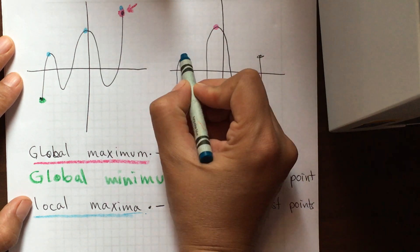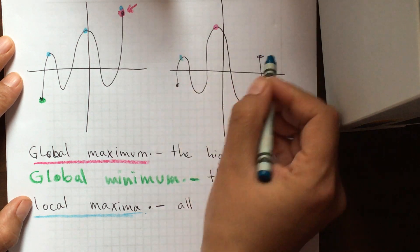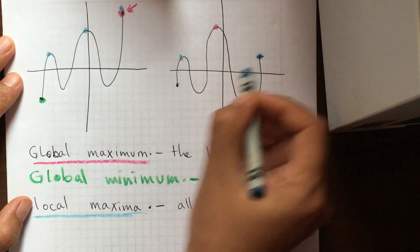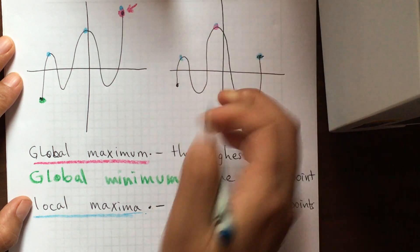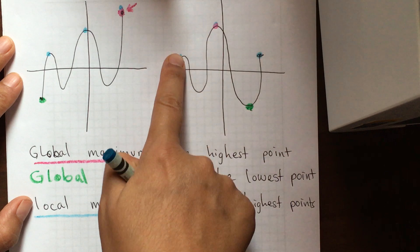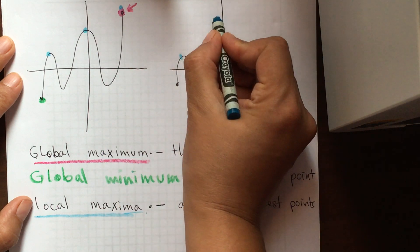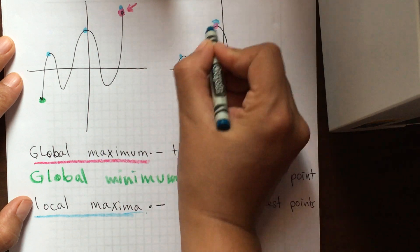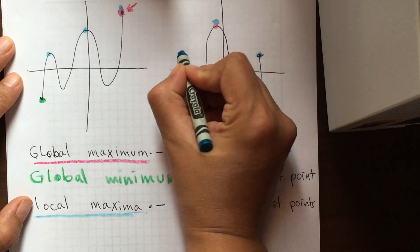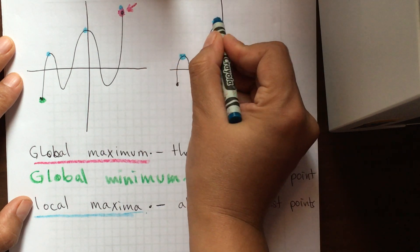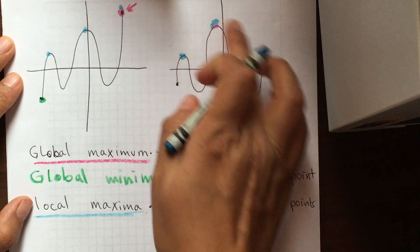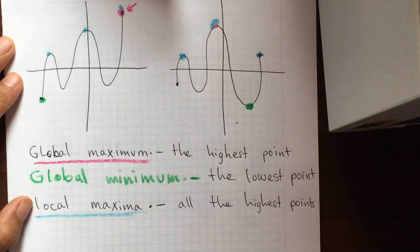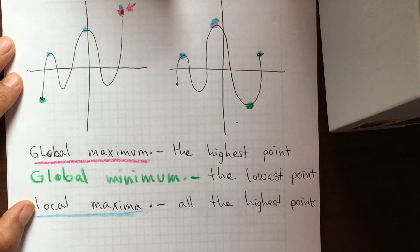On this other graph we would have these three points. Notice how I'm including this one here because that's also called a local maxima or maximum.